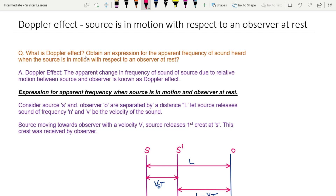What is the Doppler effect? We need to obtain an expression for the apparent frequency of sound when the source is in motion with respect to an observer. Here is the Doppler effect — we will discuss the definition and then derive the expression and equation.